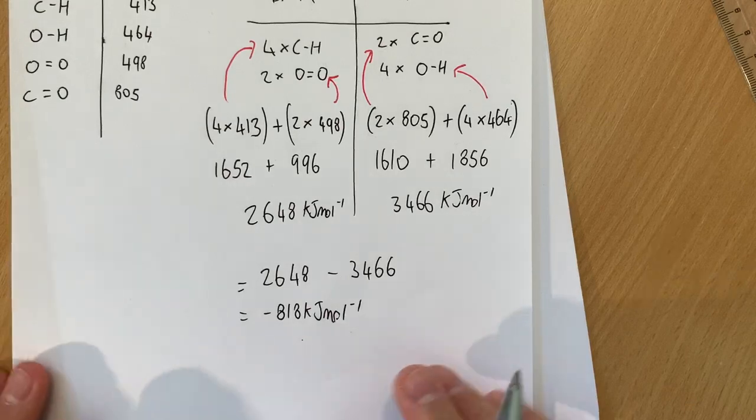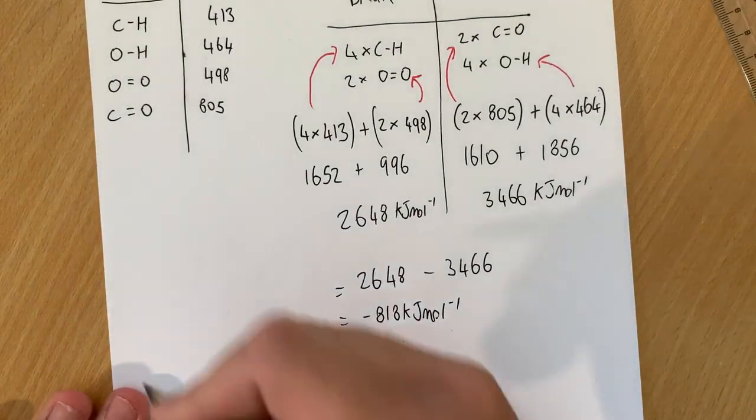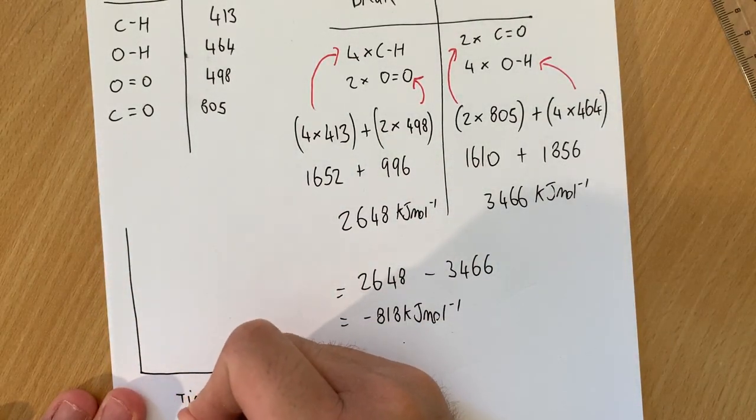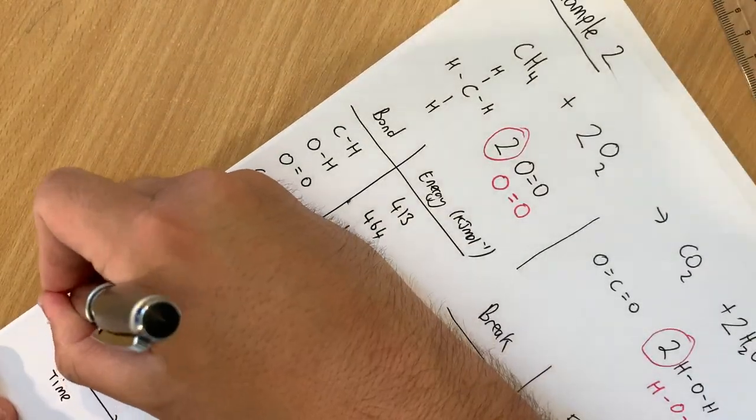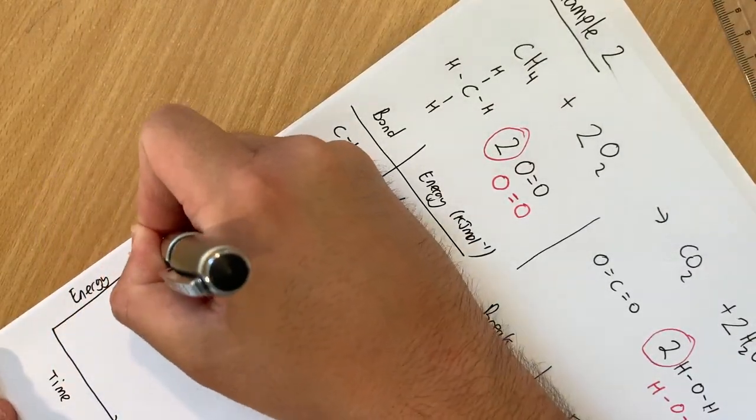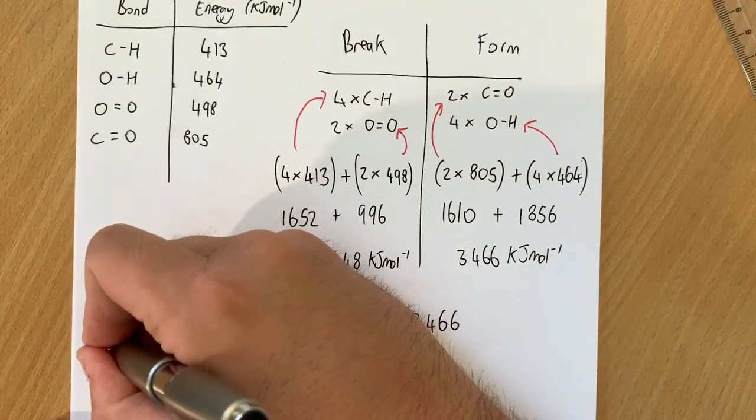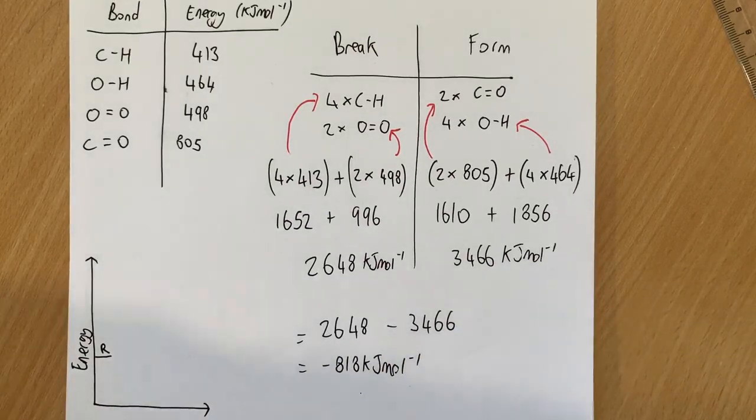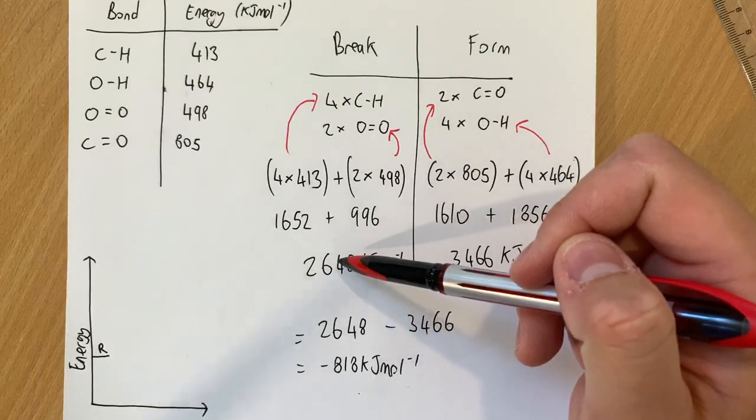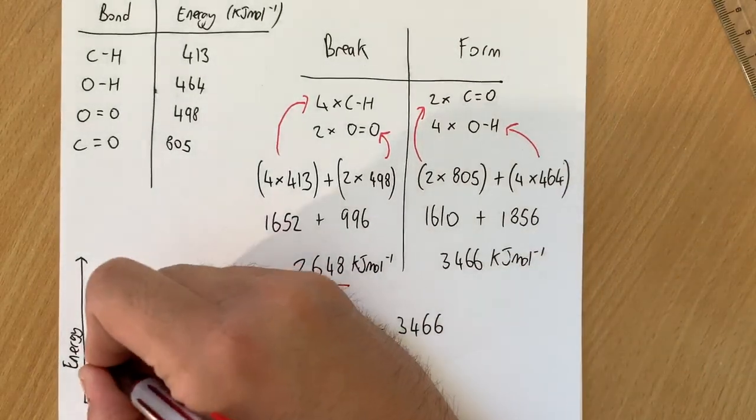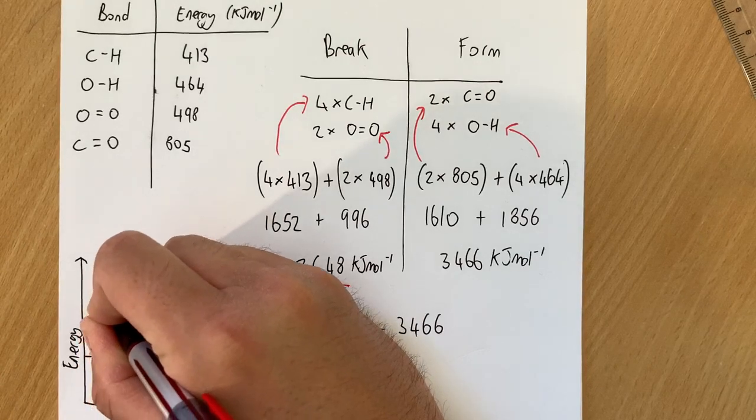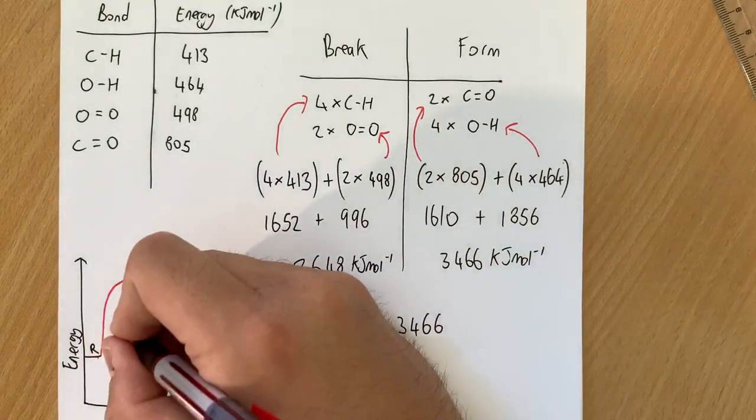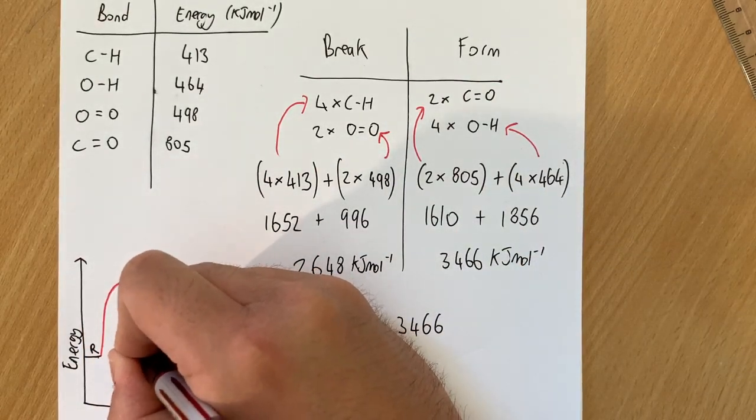So what does this mean? Well if we go back to what we did last time which was the energy level diagram. So I'll just quickly sketch this. Well this was time. And this was energy. If you remember we start with reactants at a certain height. And over the course of reaction they change. So what do these numbers refer to? Well the energy needed to break the bonds in the reactants. In this case 2,648 is the energy needed to go up here to the peak of the curve. So that from here to here in this instance is 2,648 kilojoules per mole.